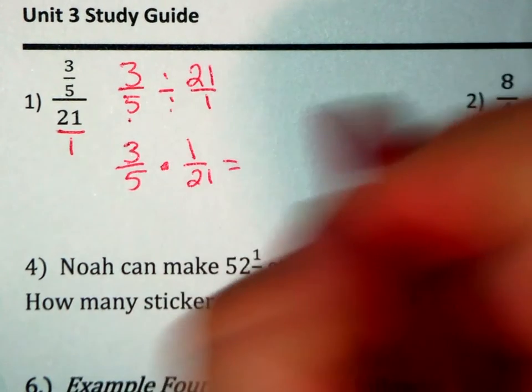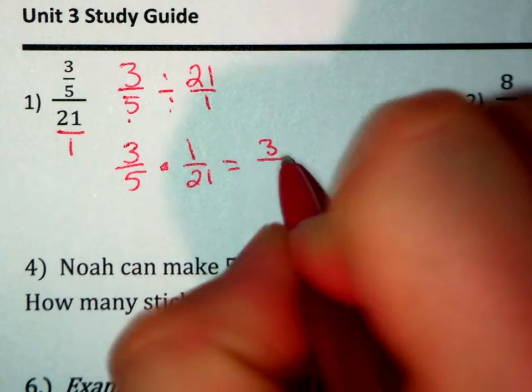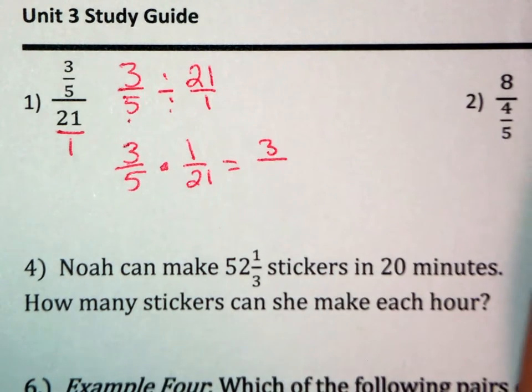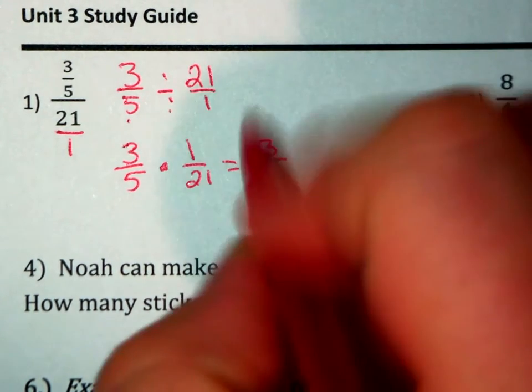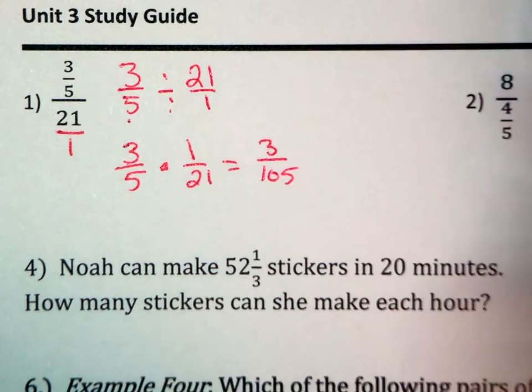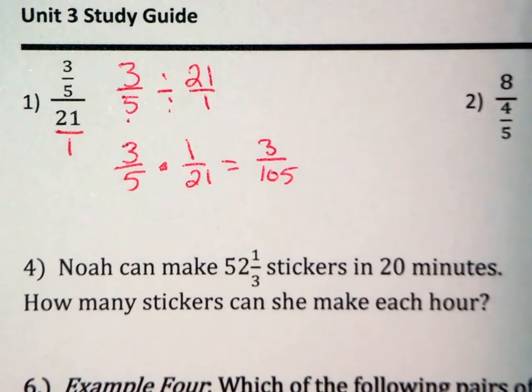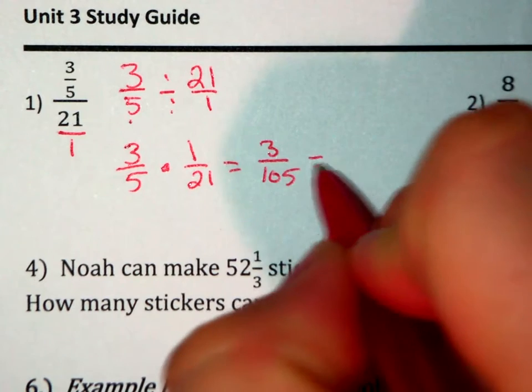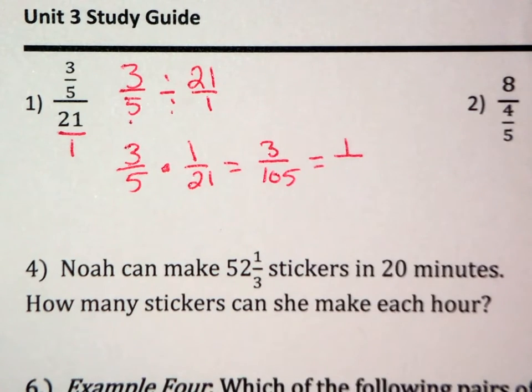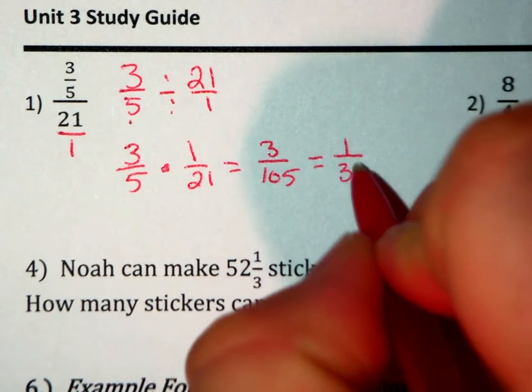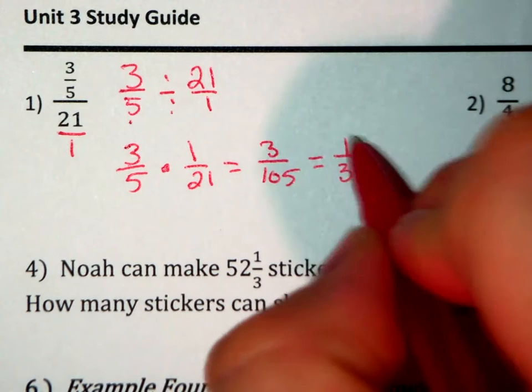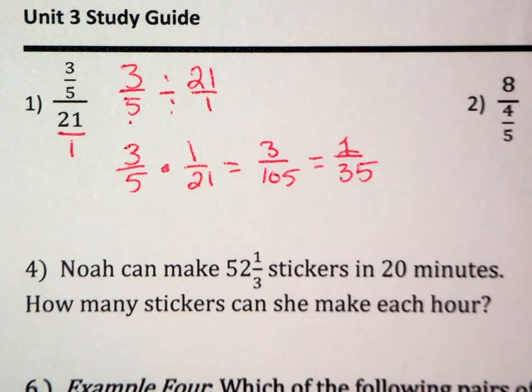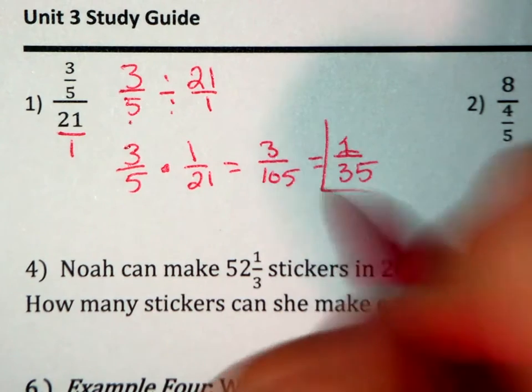So, 3 times 1 equals 3. 21 times 5 equals 105. 3 will go into both numbers, so I will get 1 over 35. Final answer.